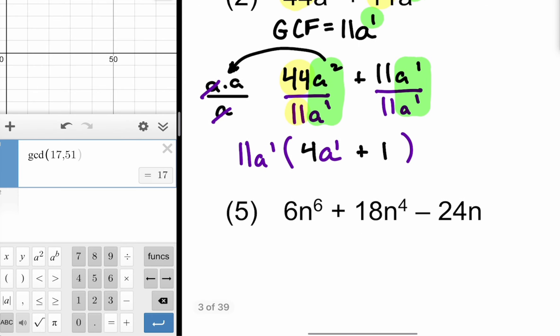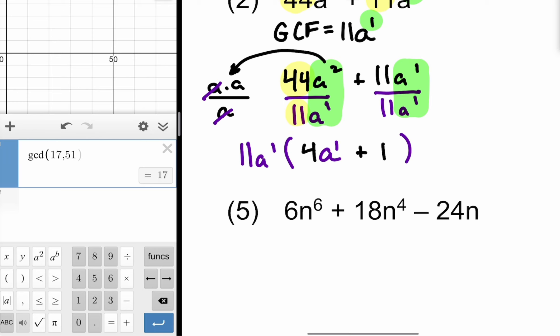Now I mentioned number five. Numerically the GCF is going to be 6. We have to take care of the variables also. Going across the line I only see one variable. N has to be raised to the lowest power that I see across the line. N to the first power. So 6N to the first. Now this numerically it's not bad. 6, 18, and 24. Those are pretty easy numbers to work with.